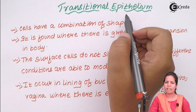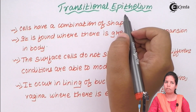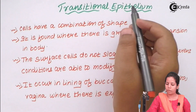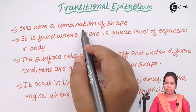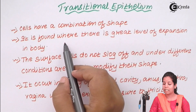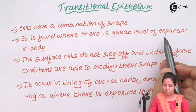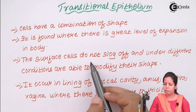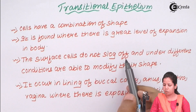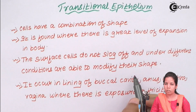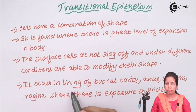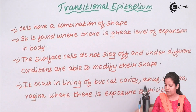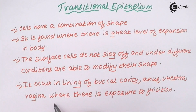Transitional Epithelium is the epithelium that can adjust or change itself under different conditions. It is made up of a combination of differently shaped cells and is found where there is a great level of expansion in the body. The surface cells do not slough off and are able to modify their shape or structure. It occurs in the lining of the oral cavity, buccal cavity, anus, urethra, vagina, and other areas where there is exposure to a great deal of friction.